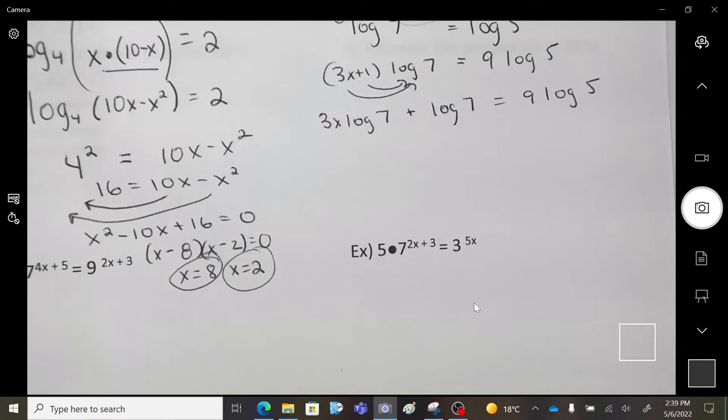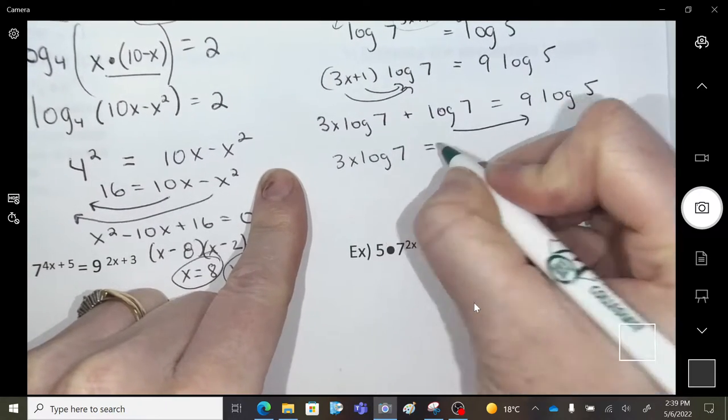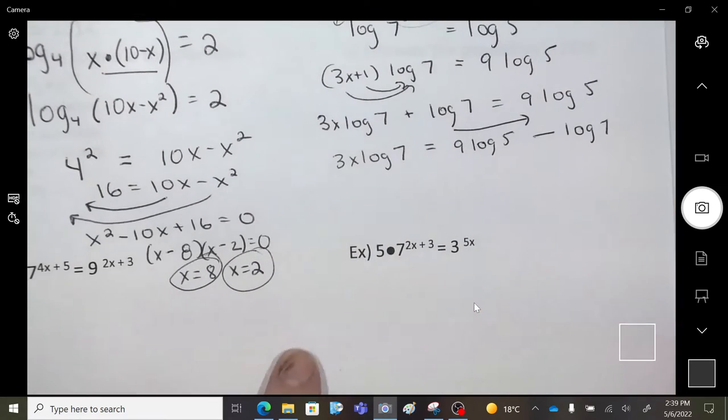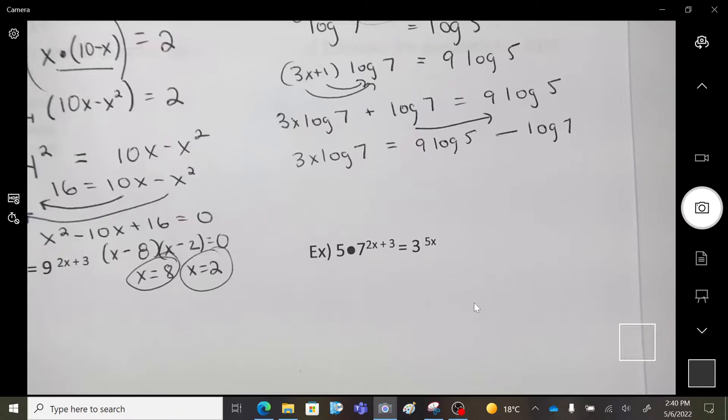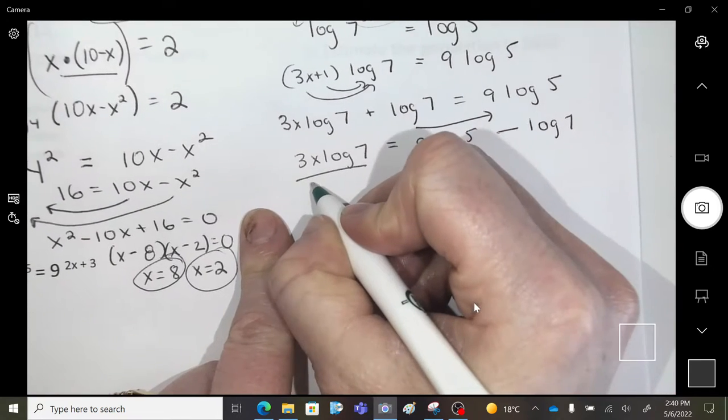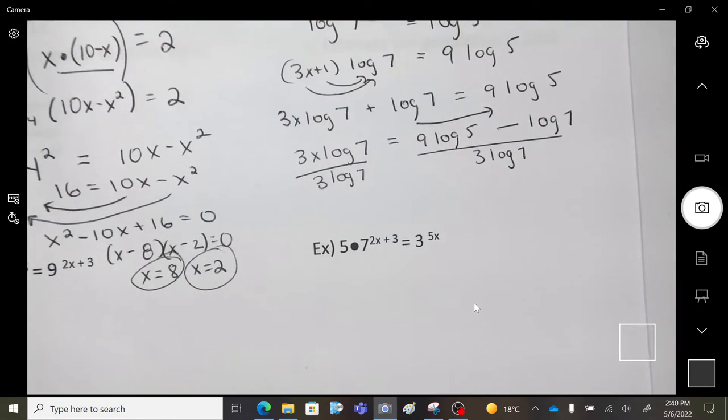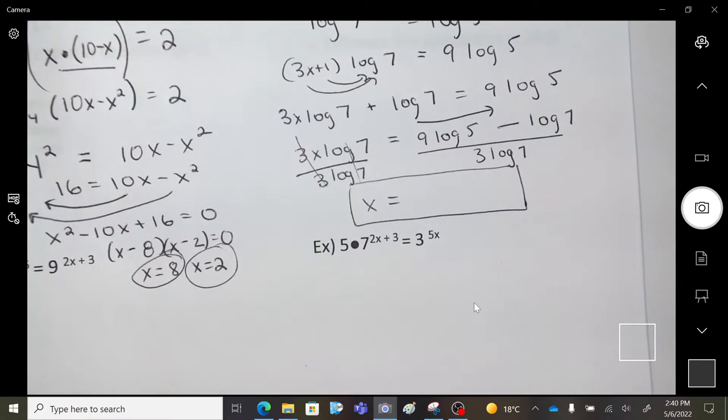Now here's the next idea. Yeah, my whole goal is to get x alone. So anything with an x, I'm going to keep. Anything without an x, I'm going to move away. So 3x log 7 stays. 9 log 5 minus 1 log 7. Now how do I get the x alone? Divide by a 3 log 7. We're just doing algebra. So x equals, and now here's where we get to find out if you like your calculator or not.